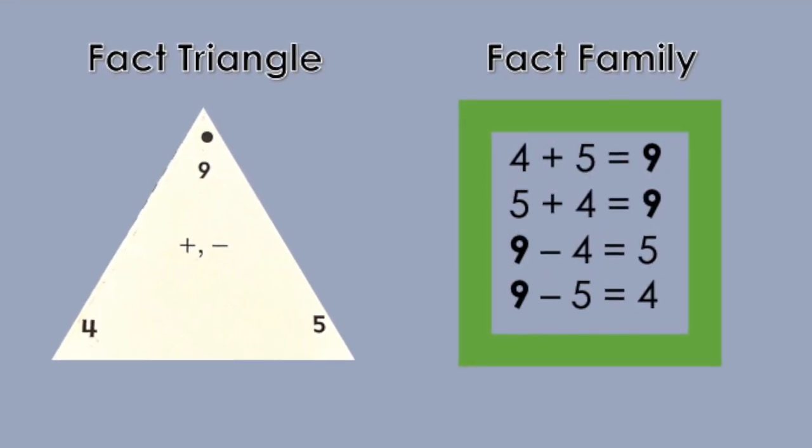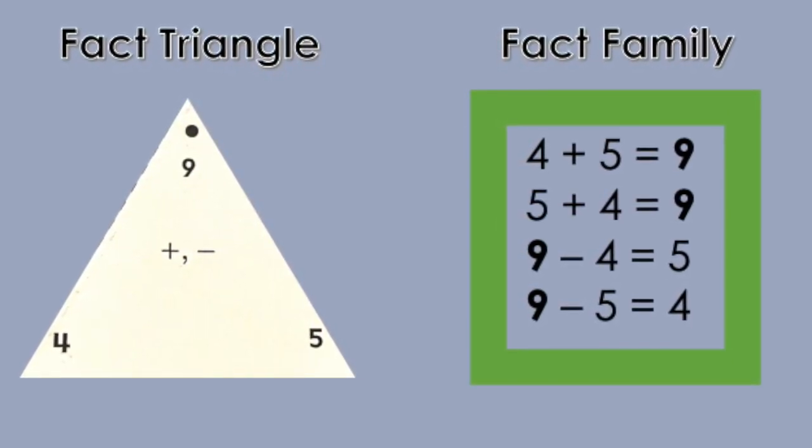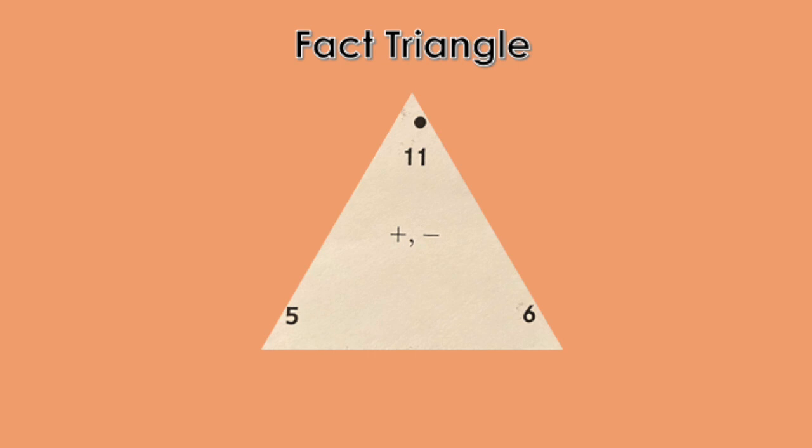Now we can see that a fact triangle shows us the three numbers in a fact family. Let's take a look at another fact triangle. Point to the biggest number on the fact triangle. Right, the biggest number is 11. 11 is the Big Daddy.